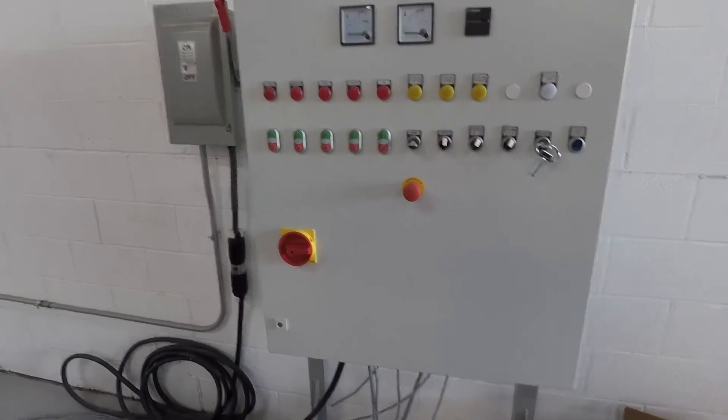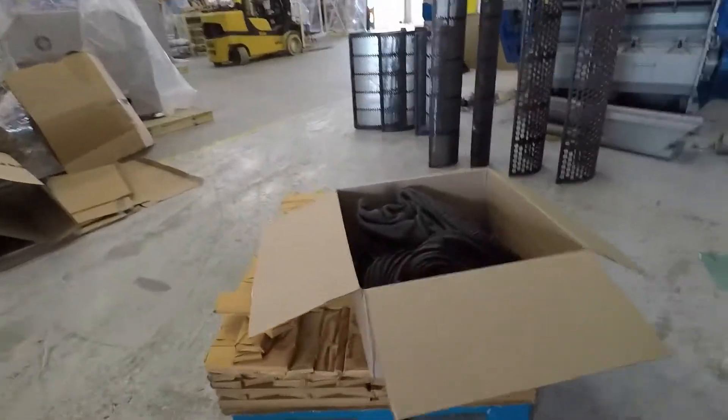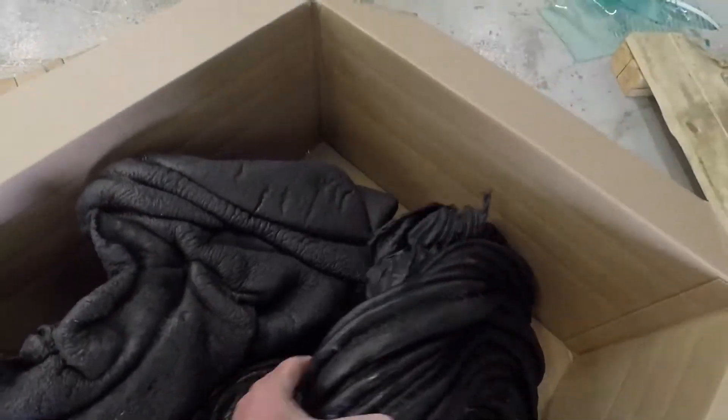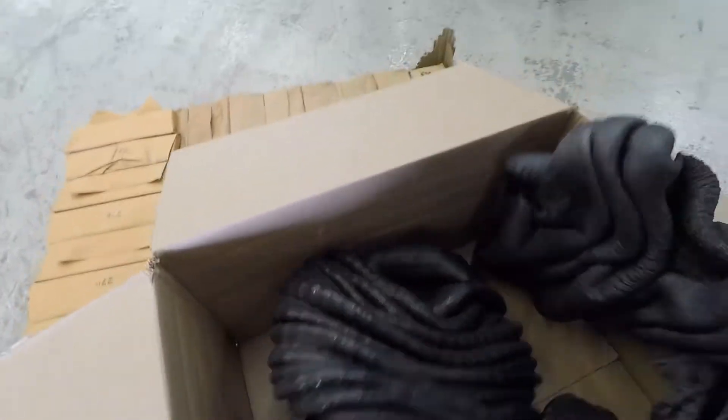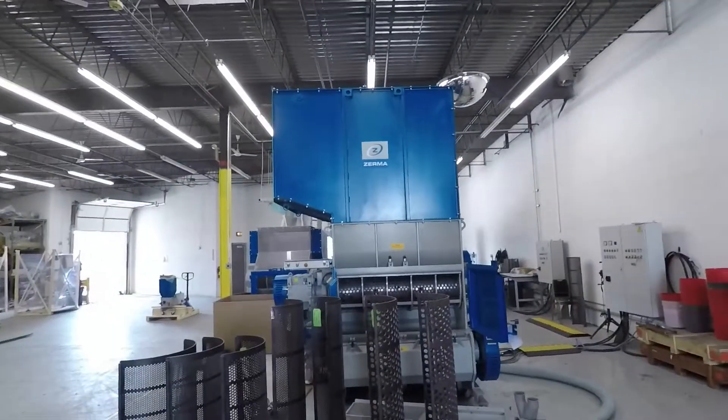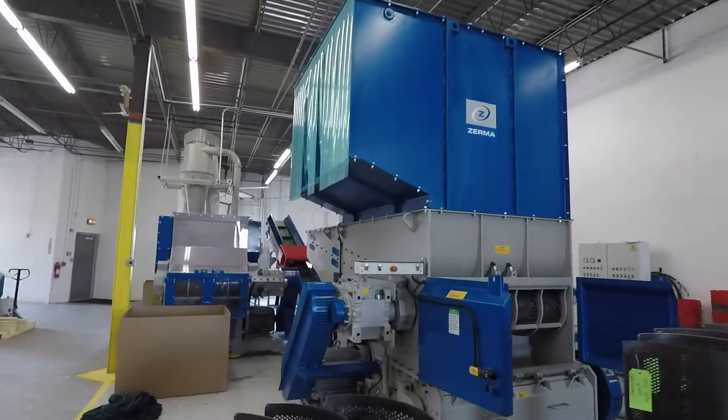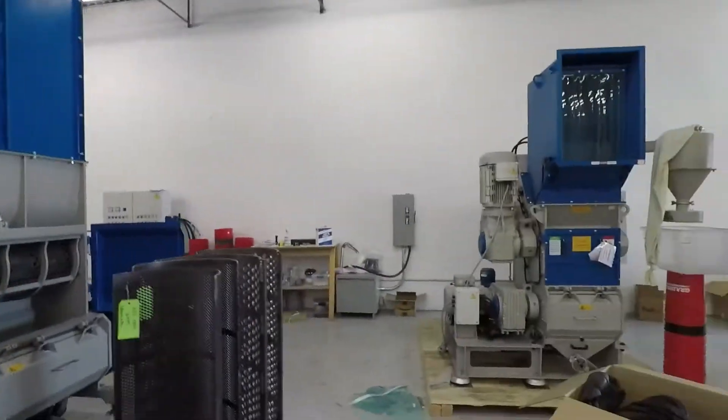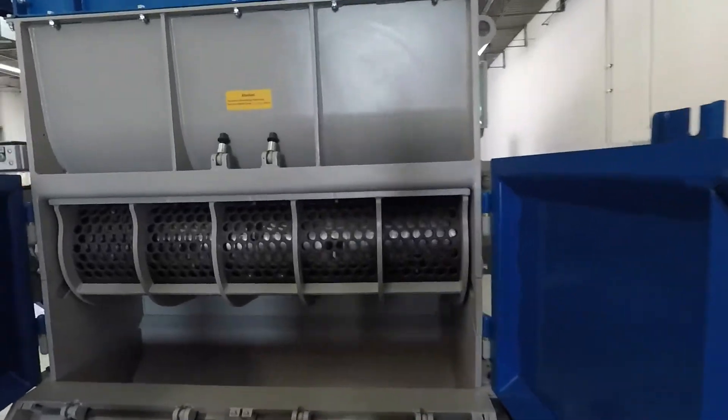Today we're running a test in a ZCS 600 combo shredder granulator. We'll be testing several purge items. The unit we have suggested for you is the ZCS 1000, which is more similar to the ZCS 1400 larger unit you see here. But they all operate with the same principle: shredder rotors on top directly feeding into a granulator rotor.